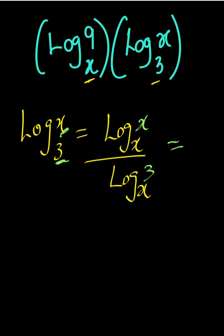And of course we all know that logarithm of X to base X will always give us 1, because the logarithm of anything to its own base is 1, divided by logarithm of 3 to base X.